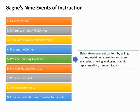Event 5 — Provide Learning Guidance: To help your learners learn and retain the information, provide alternative approaches that illustrate the information you're trying to convey. To help learners encode information for long-term storage, additional guidance should be provided along with the presentation of new content. Guidance strategies include the use of examples, non-examples, case studies, graphical representations, mnemonics, and analogies.